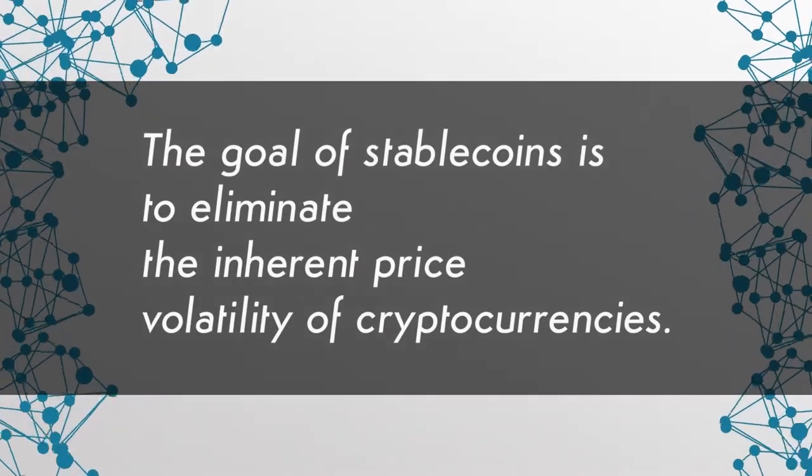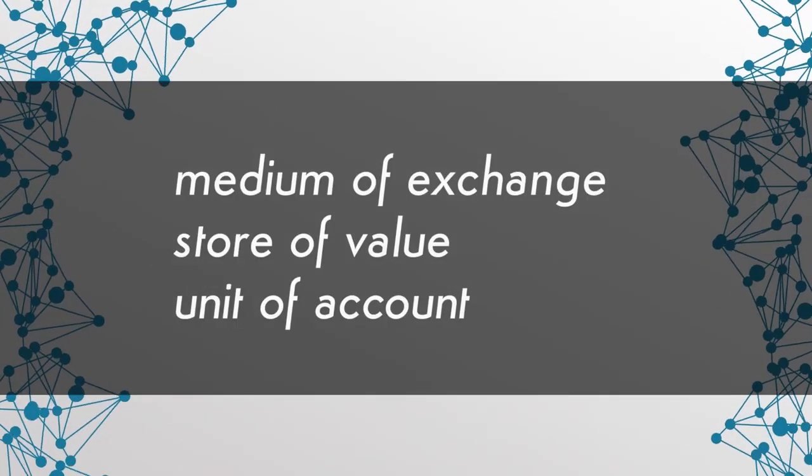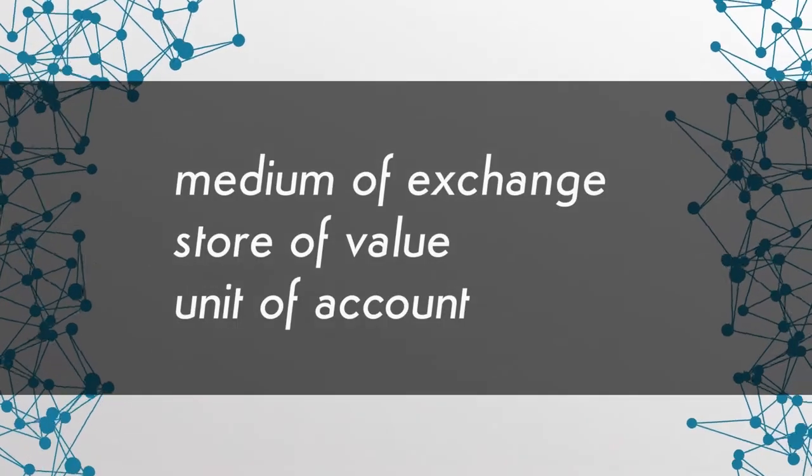According to some, those fluctuations in value are one of the biggest obstacles to widespread crypto adoption. In order to serve as a proper currency, an asset must be able to perform the following three functions: it needs to serve as a medium of exchange, a store of value, and a unit of account. Price volatility influences all three of those aspects and pushes crypto into the realm of speculative assets, rather than real-life currency.